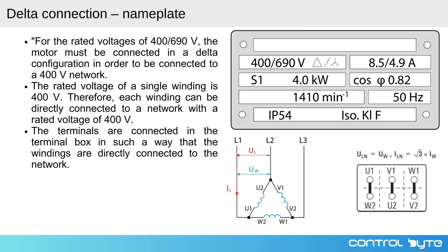Unlike the star configuration where the voltage across each winding is reduced, in the delta configuration each winding is directly exposed to the full line voltage.